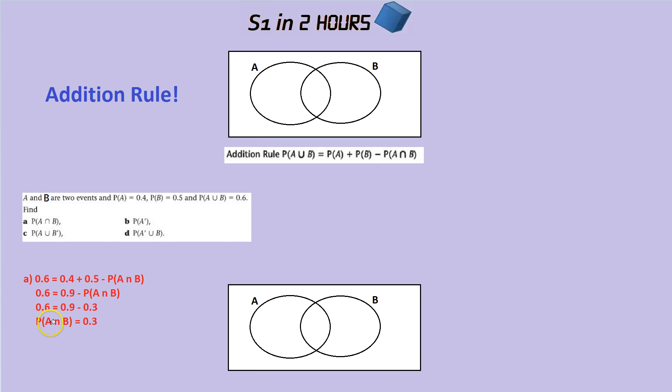So the probability of A and B is 0.3. Remember A and B is simply the middle section. One final recap. So the formula says that you add A, all of A, you add all of B and you take away the overlap because you double counted it to get the probability of A or B. So we can simply use the formula for that question A.